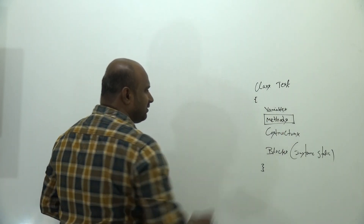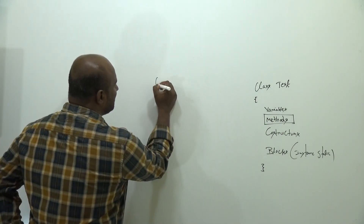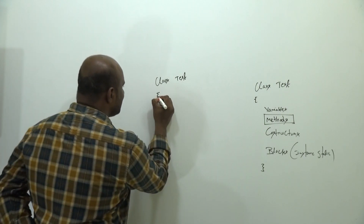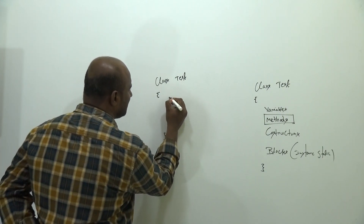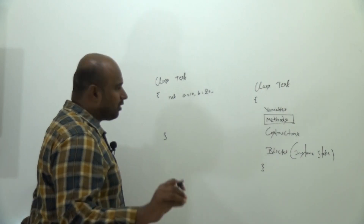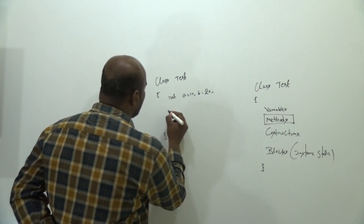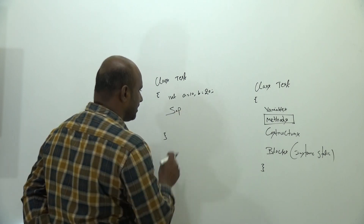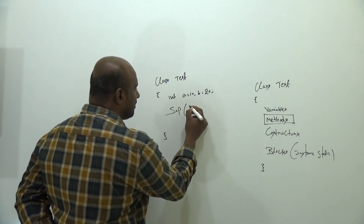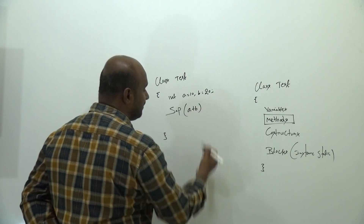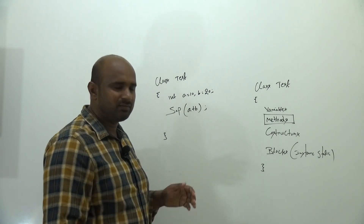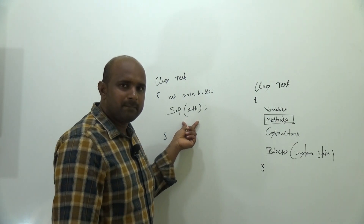What is the purpose of methods? In object-oriented programming, I declare a class named TestClass. Inside the class I declare two variables: int a equals 10, b equals 20. Now if I want to perform addition of two numbers, I'd write system.out.println of a plus b. But is writing logic directly inside the class allowed?